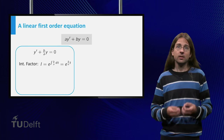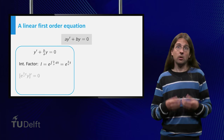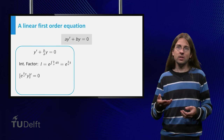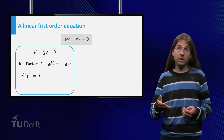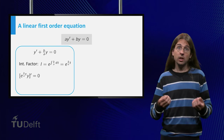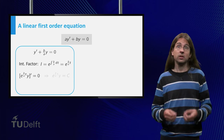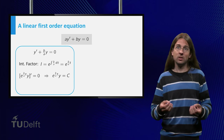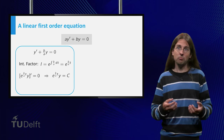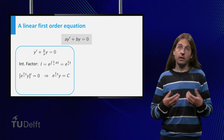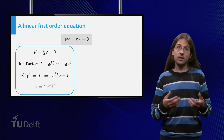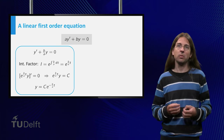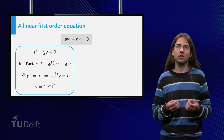This gives that the derivative of e to the power b over a times y equals zero, so e to the power b over a times t times y is a constant, and y equals constant times e to the minus b over a times t.